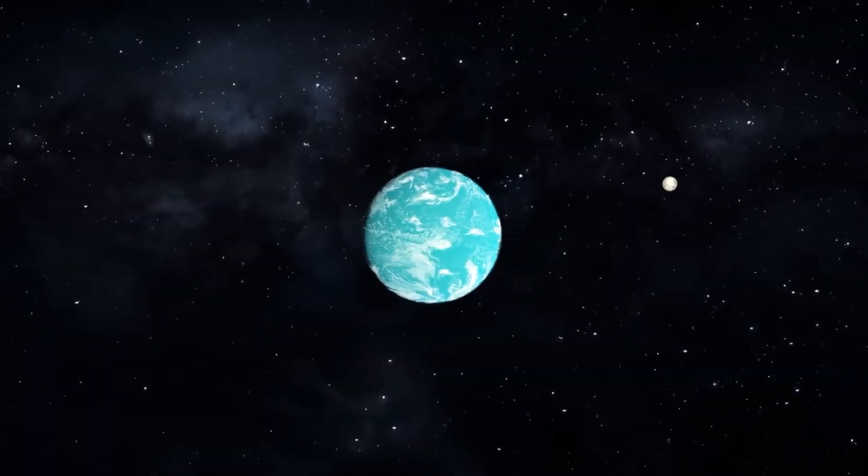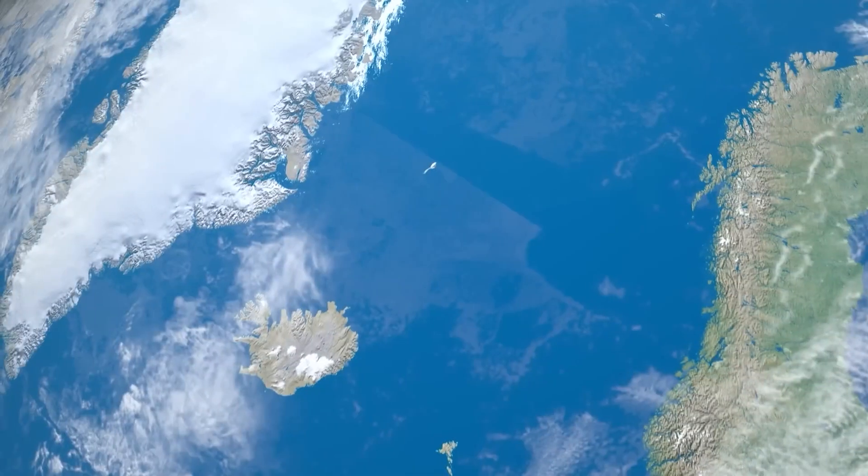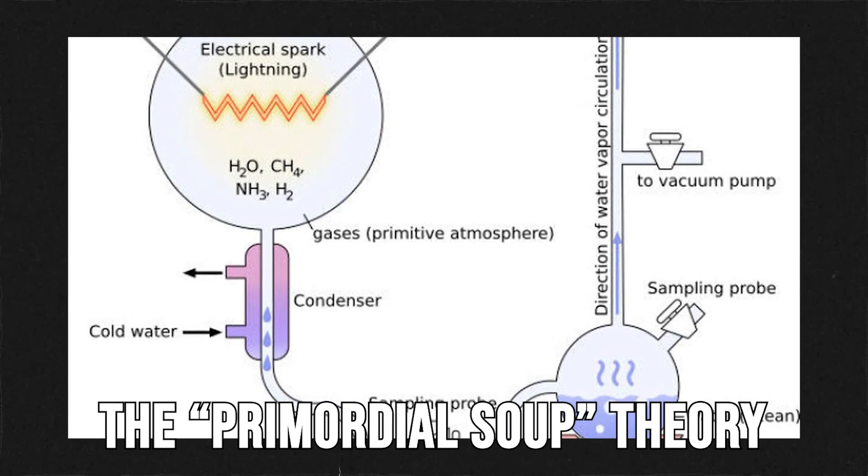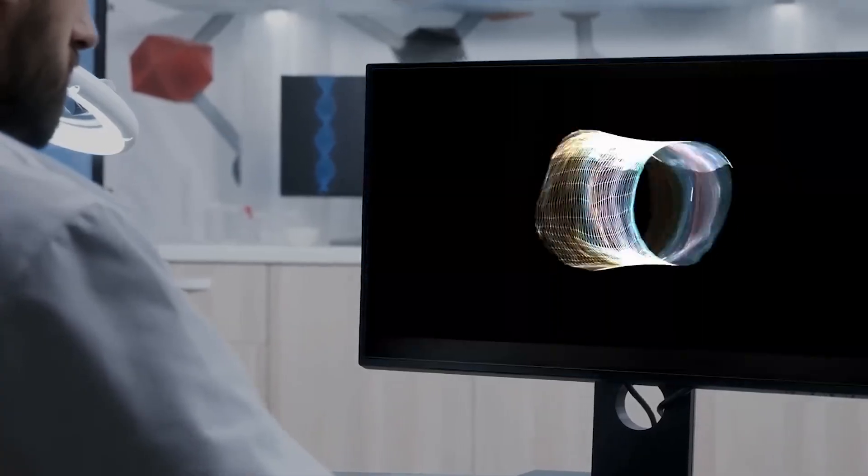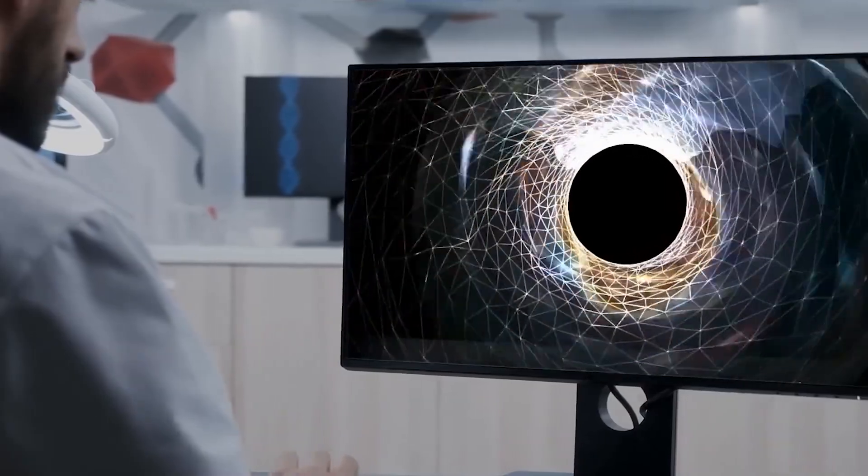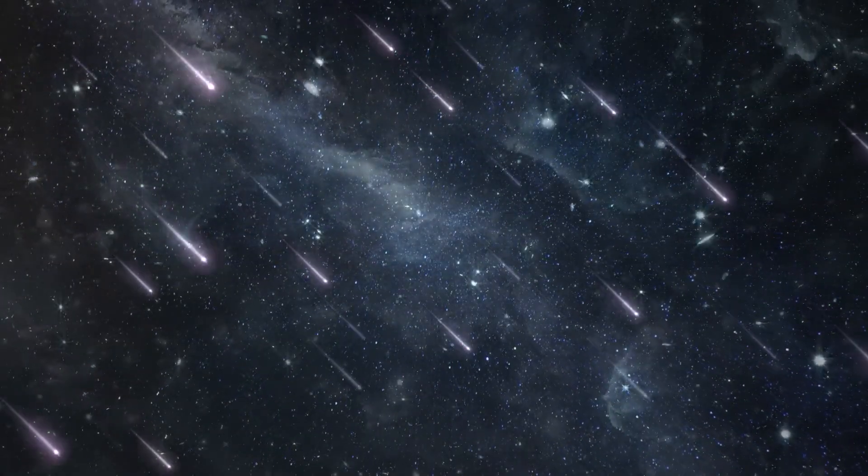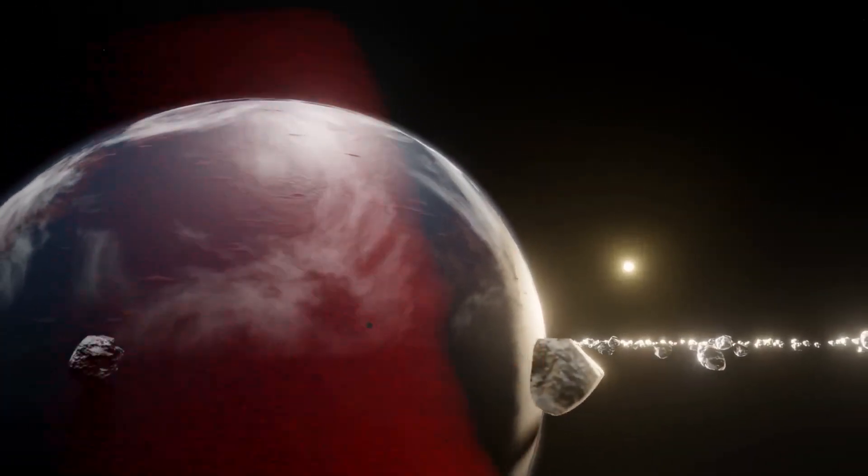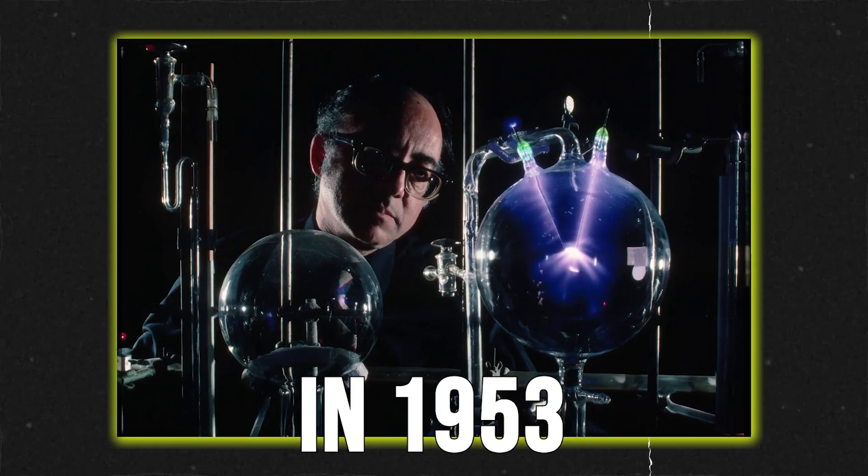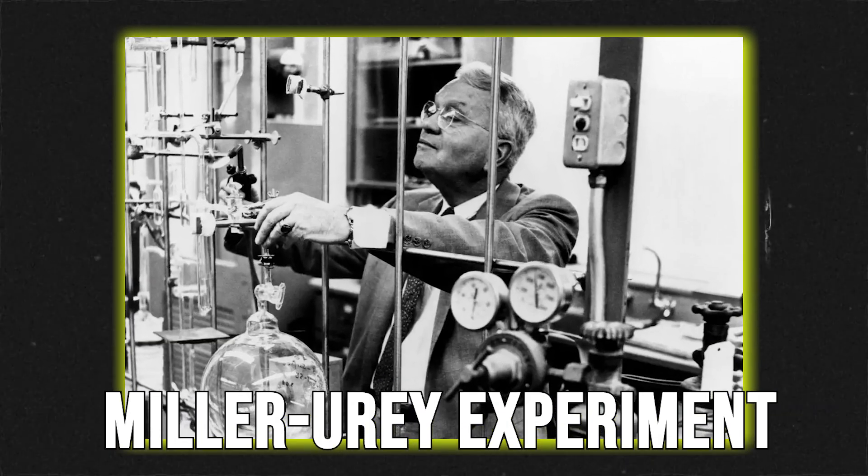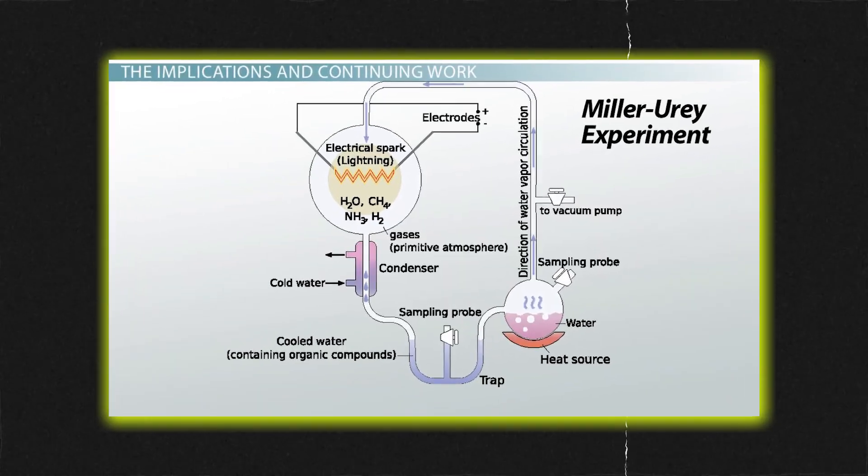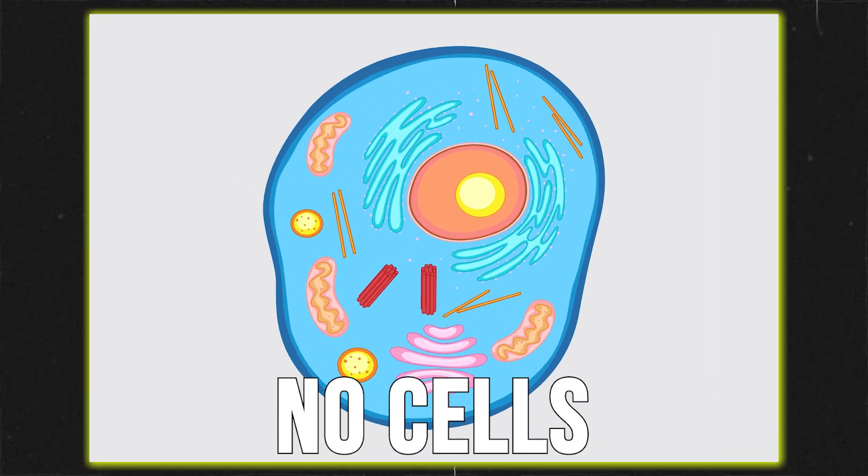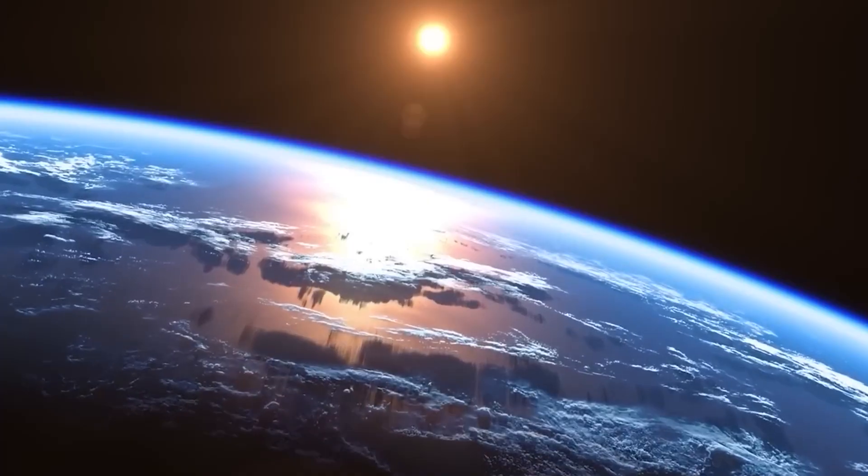But what if life didn't begin in the dark, but under lightning-lit skies? According to the primordial soup theory, early Earth was covered in shallow chemical pools. When lightning struck, or UV rays pulsed from above, complex molecules began to form. In 1953, the Miller-Urey experiment simulated this environment. And within days, created amino acids, the building blocks of life. No cells, no DNA. But it was a start.